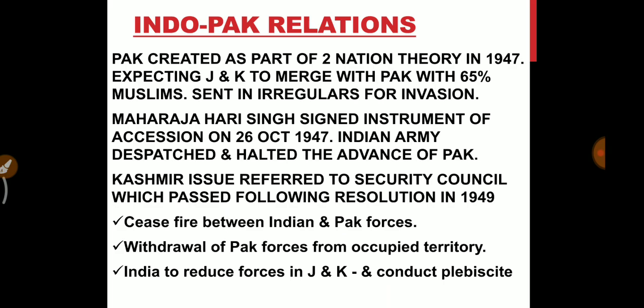Pakistan was created as part of the two-nation theory in 1947. It was carved out of India. Expecting J&K to merge with Pakistan, given its 65% Muslim population, Pakistan sent in irregulars for invasion. Maharaja Hari Singh then signed the Instrument of Accession on 26 October 1947. The Indian Army was dispatched and halted the advance of Pakistan. The Kashmir issue was then referred to the UN Security Council.